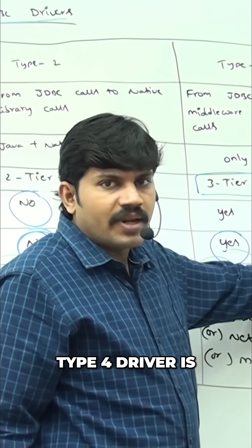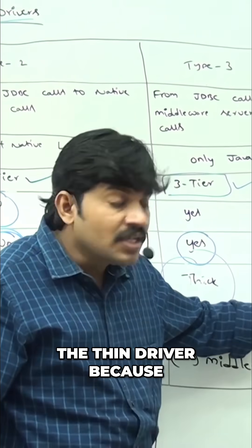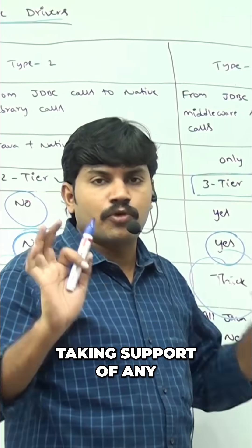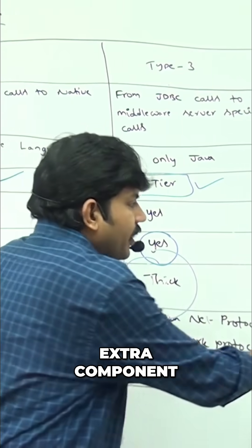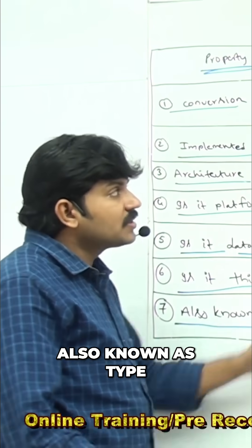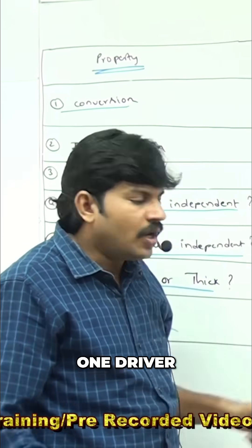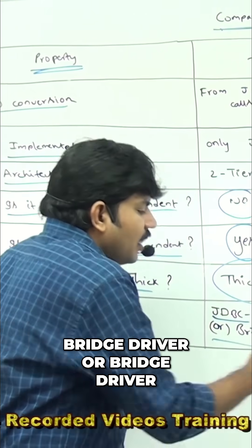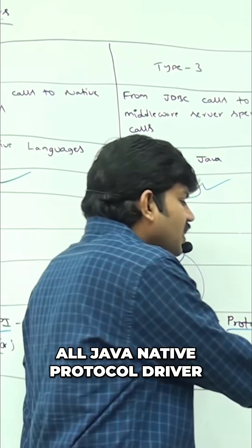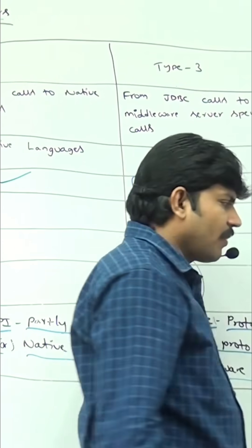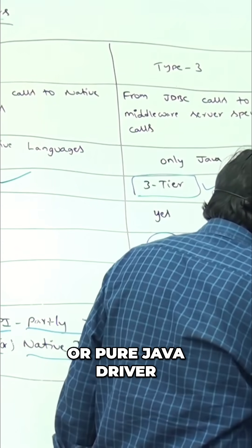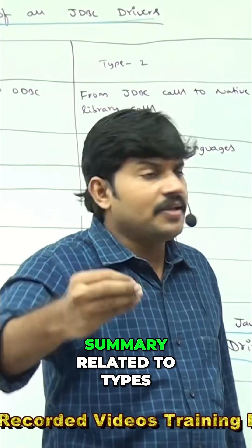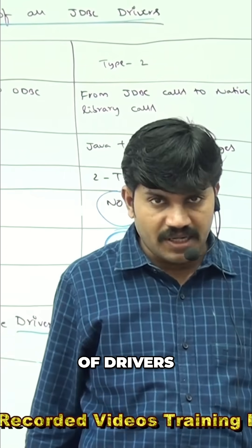To summarize the driver names: Type 1 is also known as the JDBC-ODBC bridge driver or bridge driver. Type 4 is known as the all-Java native protocol driver, pure Java driver, or thin driver. This covers the small summary related to types of JDBC drivers.